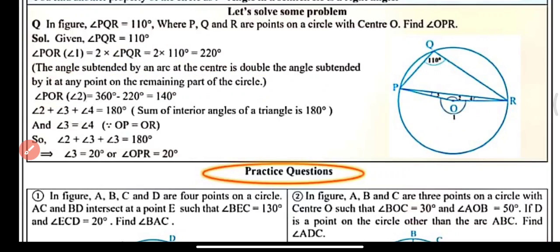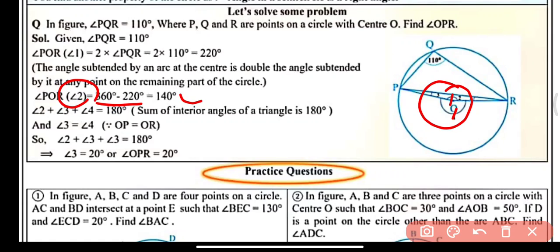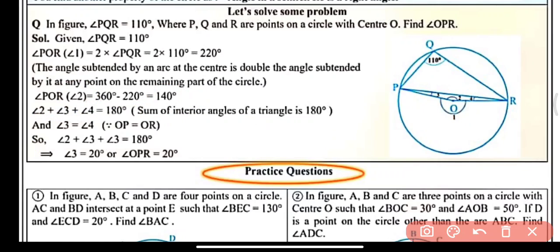The complete angle at the center is 360 degrees, so angle 1 plus angle 2 equals 360 degrees. Angle 2 equals 360 minus 220, that is 140 degrees. Now in triangle OPR by the angle sum property, angle 2 plus angle 3 plus angle 4 equals 180 degrees. Since OP and OR are both radii of the circle they are equal, so equal sides have equal opposite angles — therefore angle 3 equals angle 4. Replacing angle 4 with angle 3: 140 plus 2 times angle 3 equals 180, so twice of angle 3 equals 40 degrees.